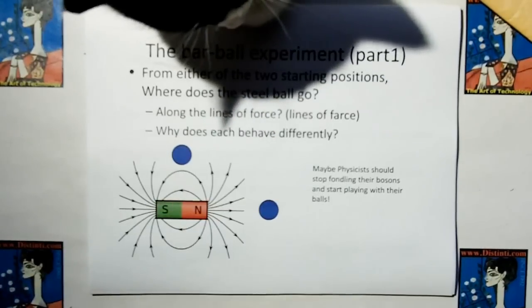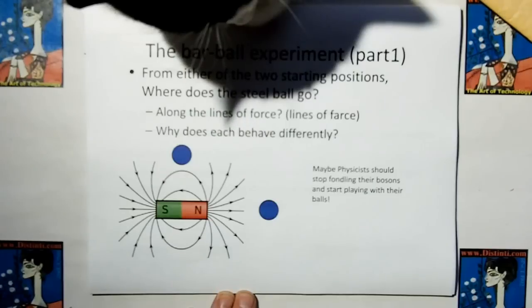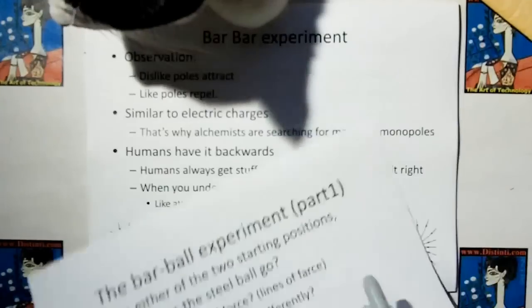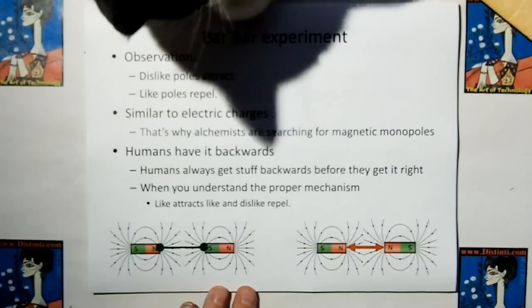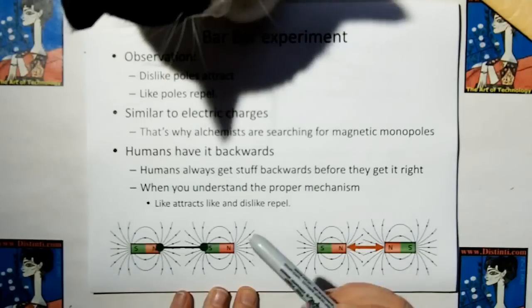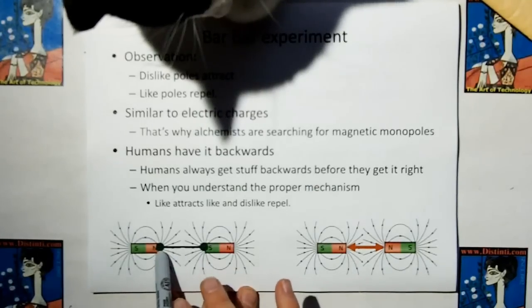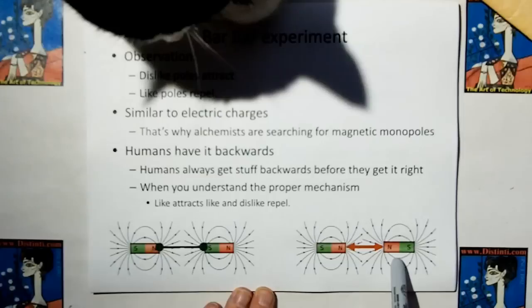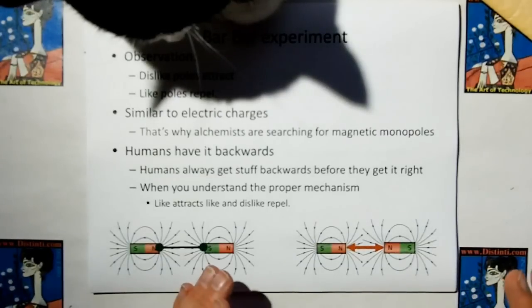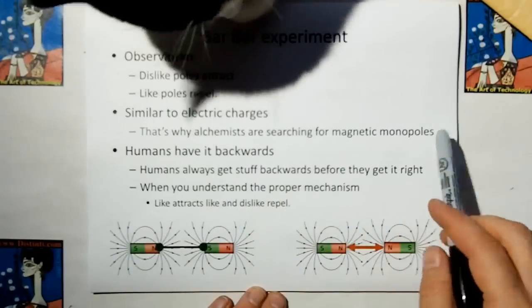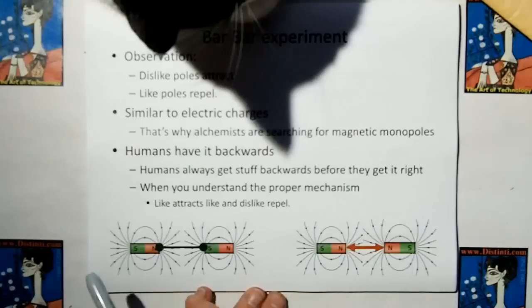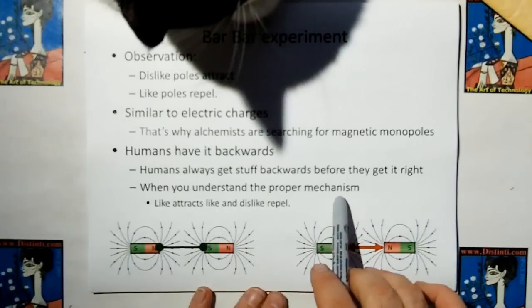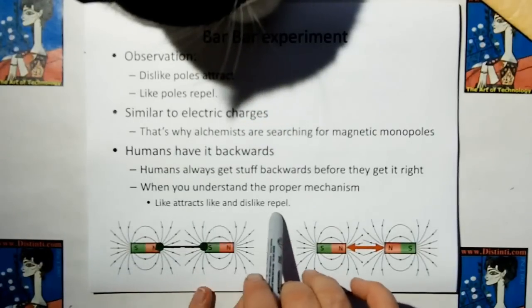Returning from the experiment, the ball did not behave according to the lines of force. Maybe physicists should stop fondling their bosons and start playing with their balls. Now we're going to do a bar-bar experiment. We observe that the dislike poles attract, but like poles repel. That's similar to what electrostatic charges do, and that's why the alchemists out there are searching for magnetic monopoles. But I'm going to show you that humans have it backwards. When you understand the proper mechanism, you're going to see it's just the opposite, that like attracts like, and dislike repel.